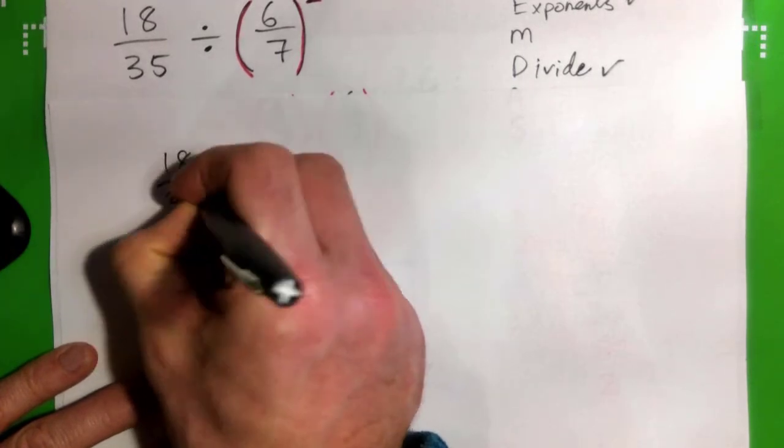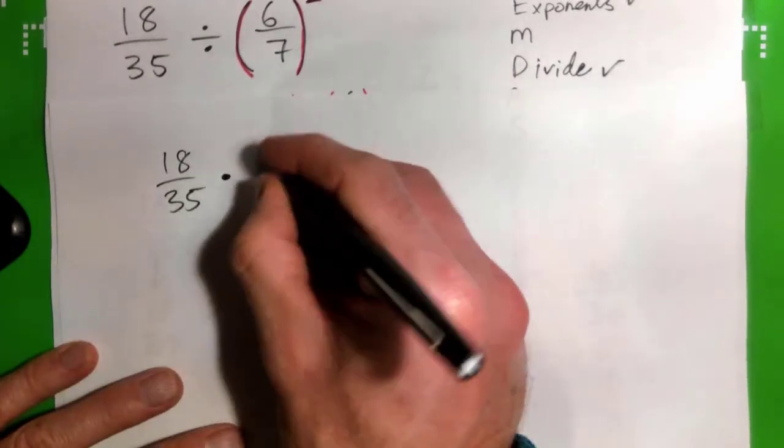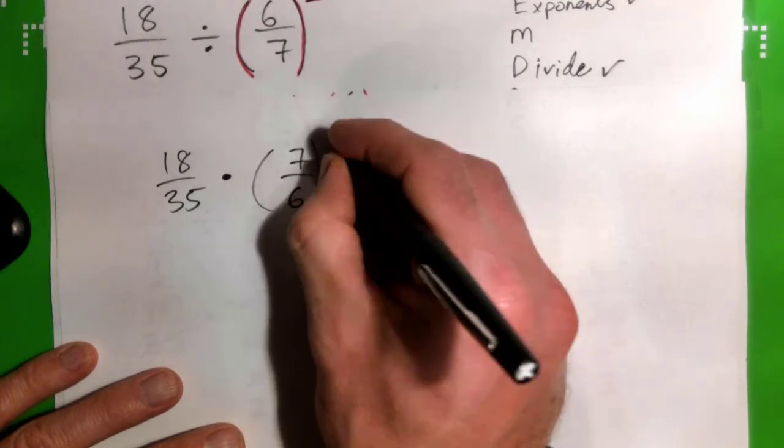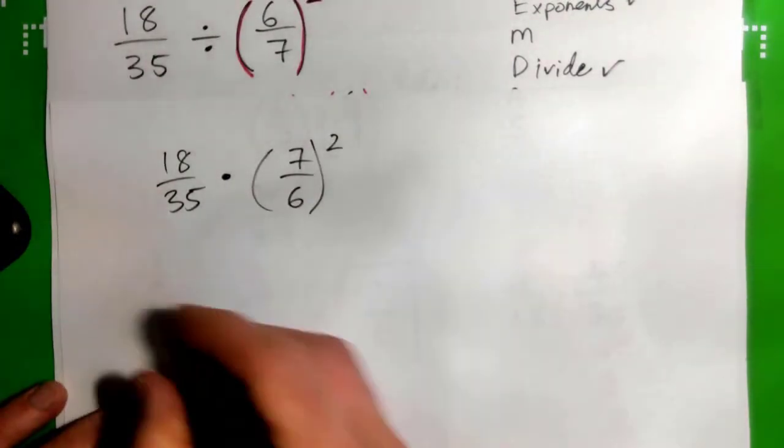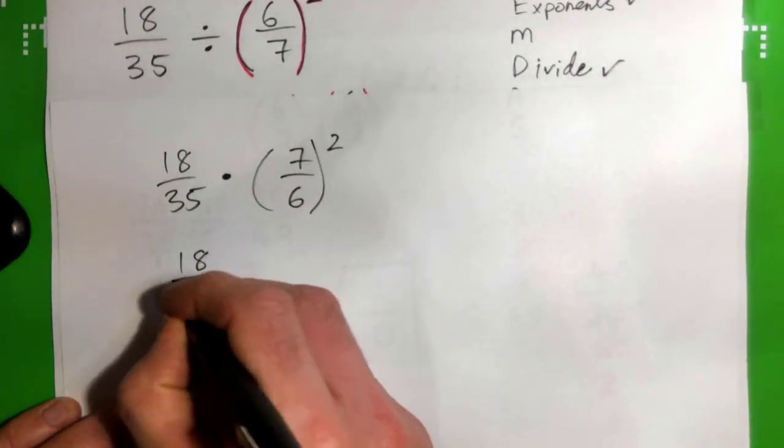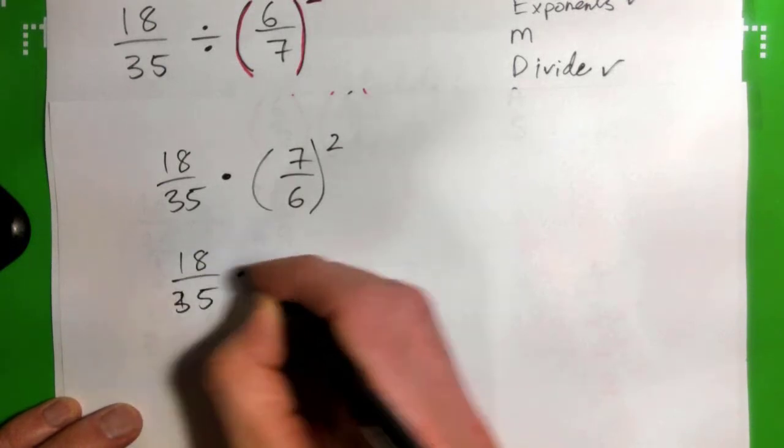18/35 times, flip this whole thing, (7/6) squared. That's a little complicated and tricky. I don't know if everybody would fully understand that.